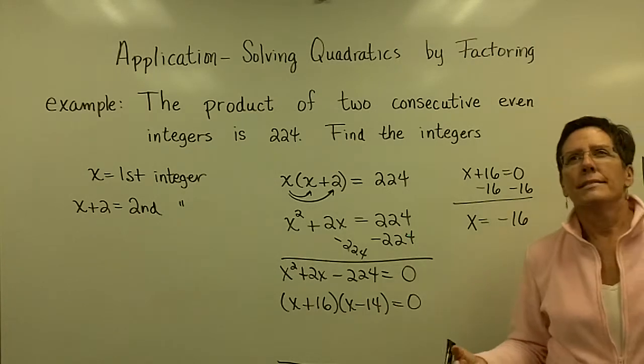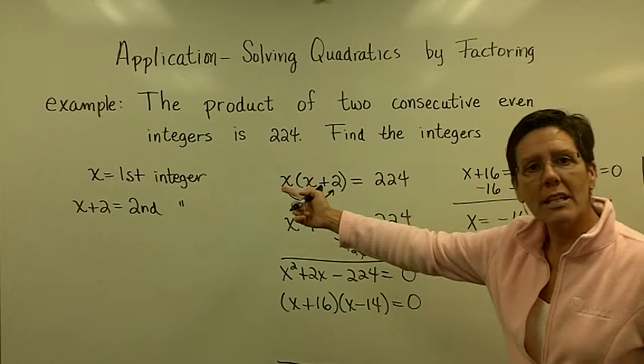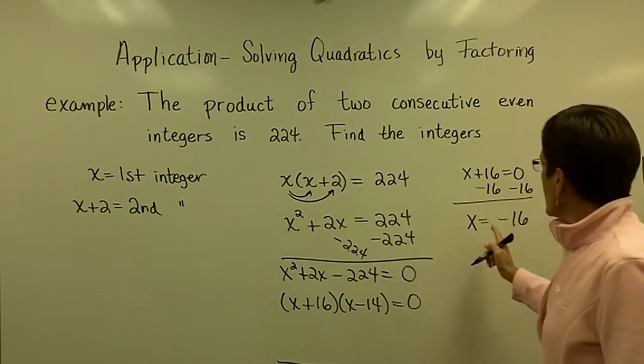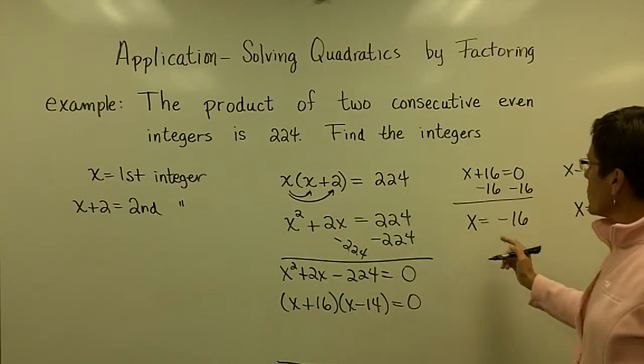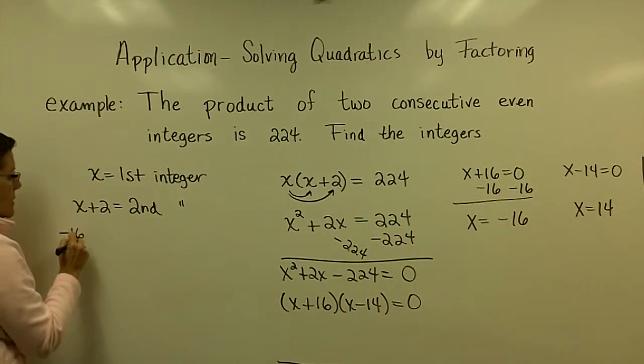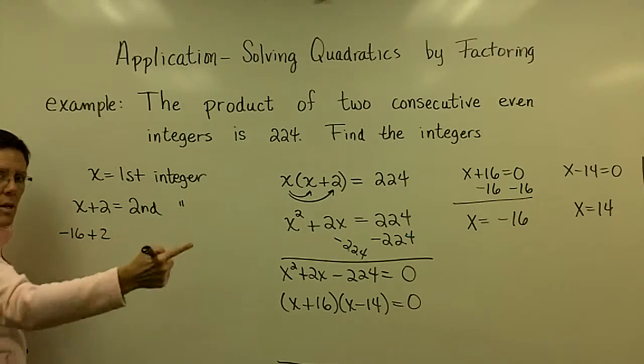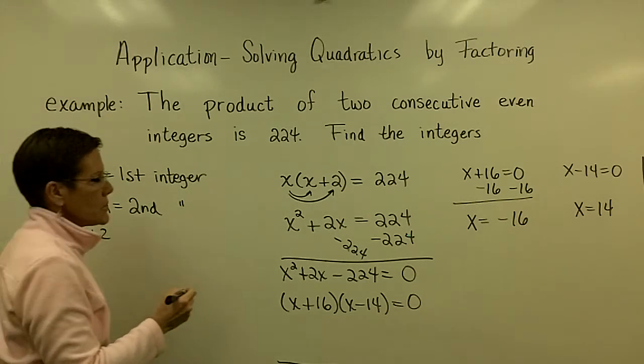This is not a real story, a real scenario. And I want two consecutive even integers. So, if one of my answers was a negative 16, if x was a negative 16, what is a negative 16 plus 2 to get my next integer, the next number in line? That's a negative 14.